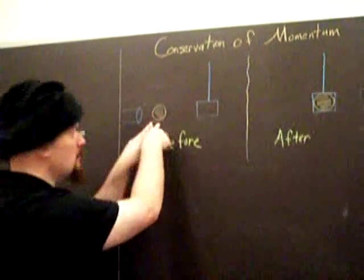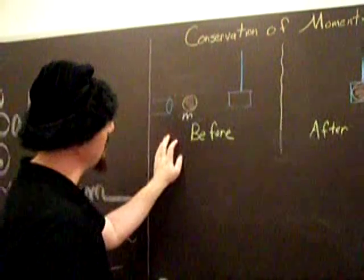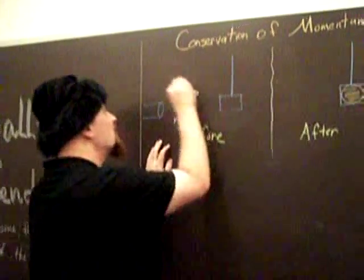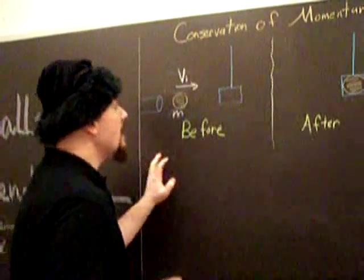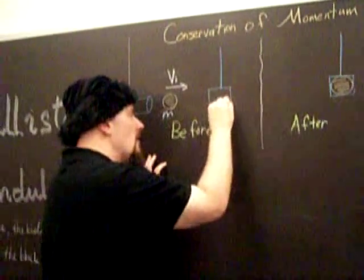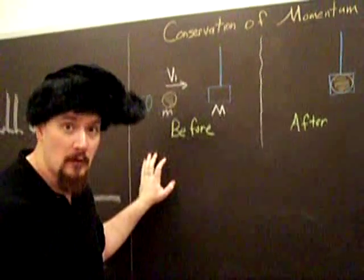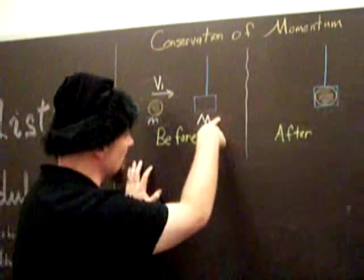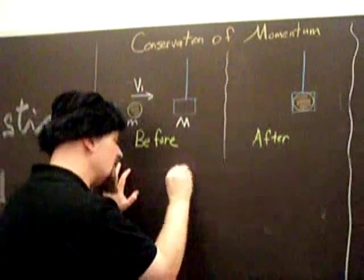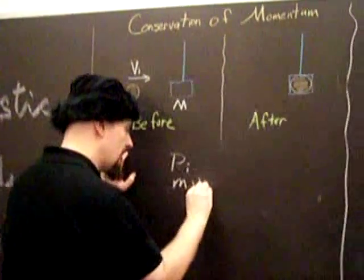This projectile, this metal ball, we'll call lowercase m for its mass, and it's going some sort of initial velocity v_i. And it's going into a pendulum, which we'll call that mass capital M. Since the pendulum is stationary, all the initial momentum will simply be m v_i.